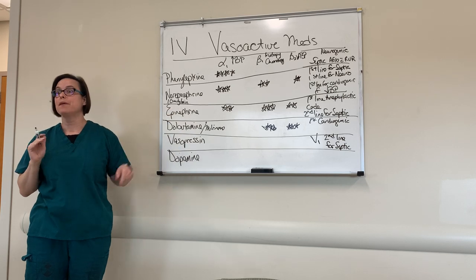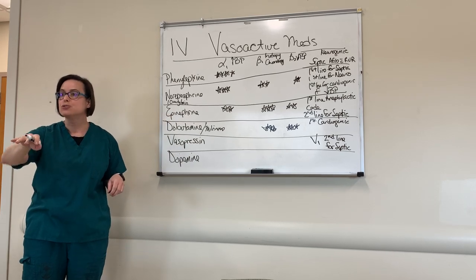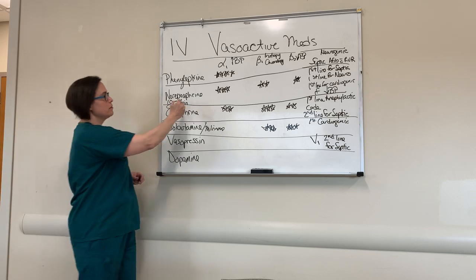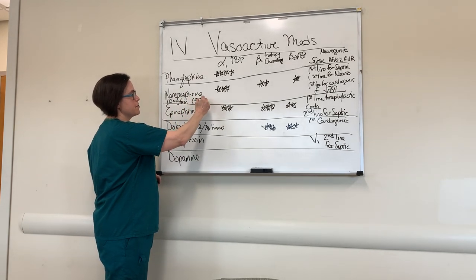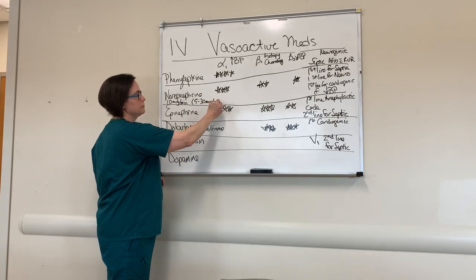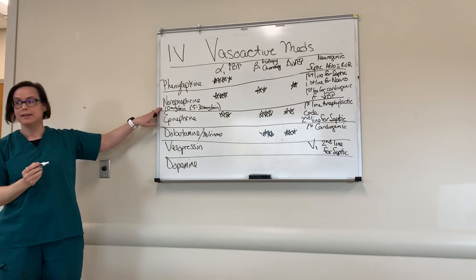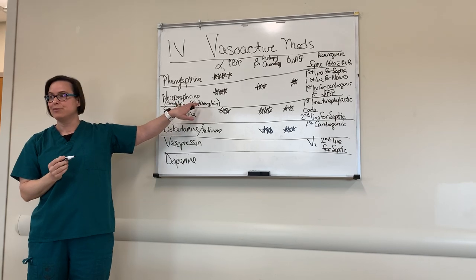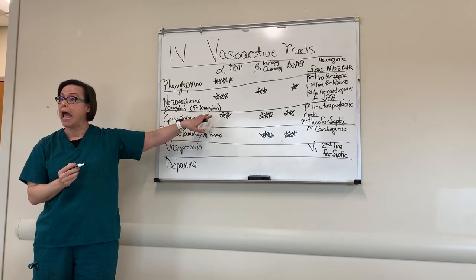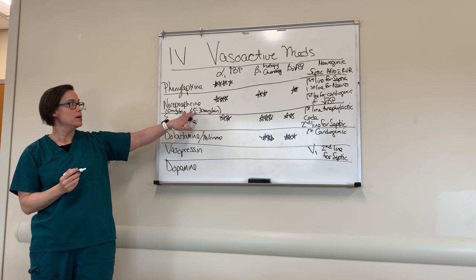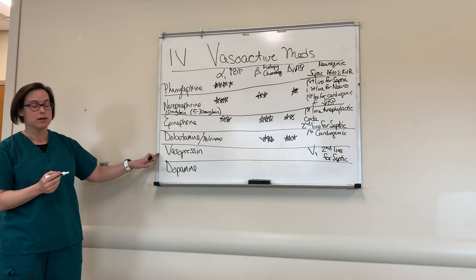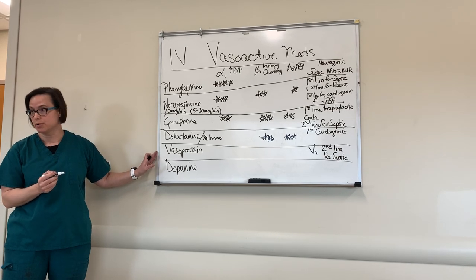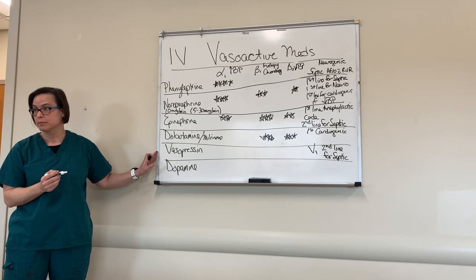The dose range for norepinephrine is generally 5 to 30 micrograms per minute. I start at 10, try to bring it down to 5 if possible, and titrate higher if needed. If I reach 15 micrograms per minute of norepinephrine without adequate response, I go ahead and add vasopressin.